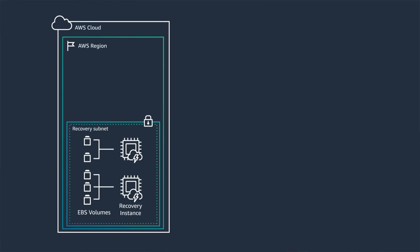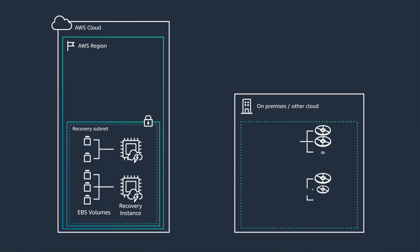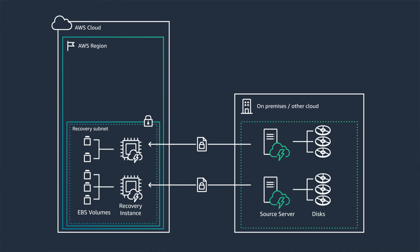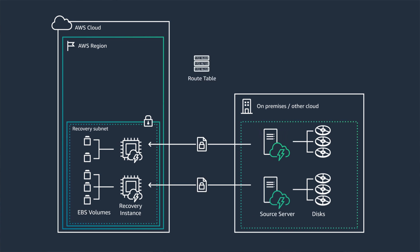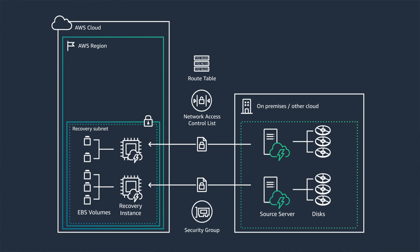Regardless of what DR strategy you use, remember to test your DR plans. Running drills can help minimize the number of unknowns during a failure. When conducting disaster recovery drills, test things like isolating your recovery subnets to prevent potential conflicts with the source location. You can do this using route table rules, network access control lists, or restrictive security groups.